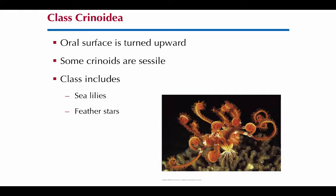Another class is Crinoidea — crinos means lily-like — so these are the sea lilies and feather stars. What seems different about them is that their arms are out and their oral face, or mouth, is facing the outside instead of down on the rock. Many of them are sessile as adults, attached to their substrate, and so that upward-facing mouth is the unique characteristic for the Crinoidea group.